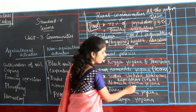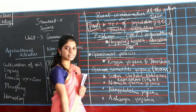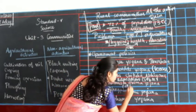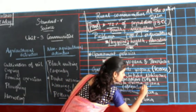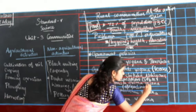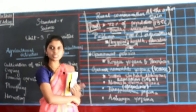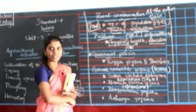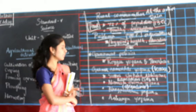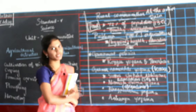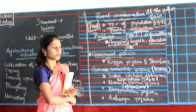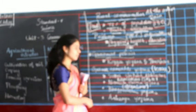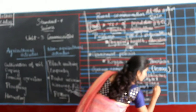And then Nirmal Gram Yojana — this is for cleanliness. It provides fresh toilets and sanitation to people living in rural communities so that they can have a better life and more proper hygiene.